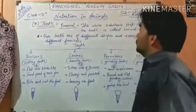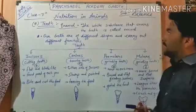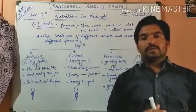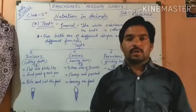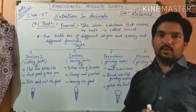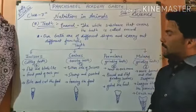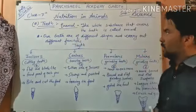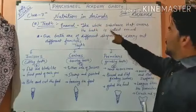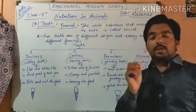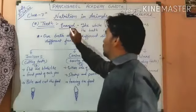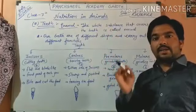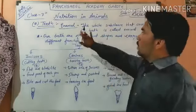Now, talking about teeth — all human beings start without teeth in childhood, and slowly as a child grows they get teeth. The white part you see on teeth is called enamel. The white substance that covers the teeth is enamel, and enamel is the hardest substance in our body.